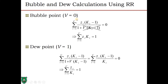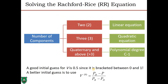The Rachford-Rice equation can also be used for bubble point and dew point calculations. For bubble point, V equals zero (saturated liquid), so Σ(Zi·Ki) = 1. For dew point, V equals one (saturated vapor), so Σ(Zi/Ki) = 1. Both can be solved iteratively for bubble point pressure or temperature, or dew point pressure or temperature.